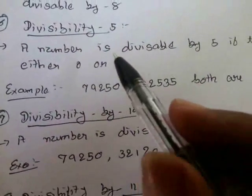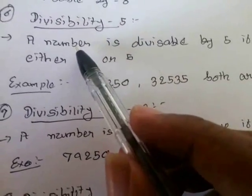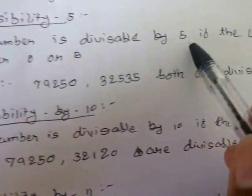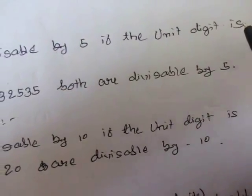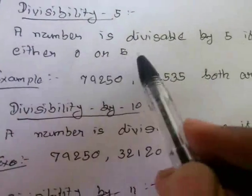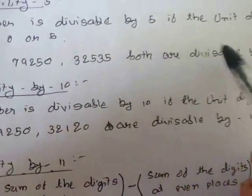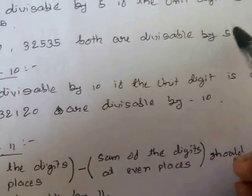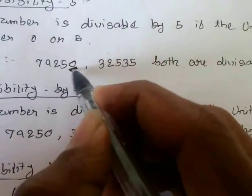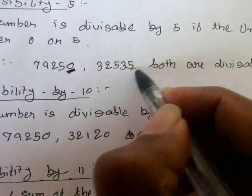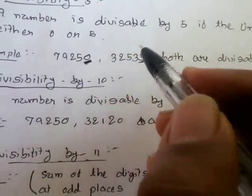The next rule is to check if a number is divisible by 5. This is pretty simple — a number is divisible by 5 if its unit digit is either 0 or 5. For example, these two numbers are divisible by 5 since the unit digit in the first number is 0 and in the second is 5.